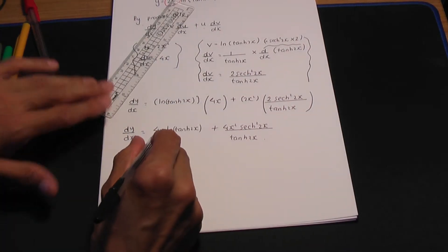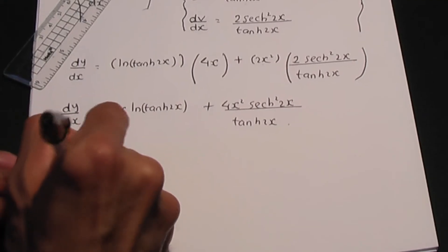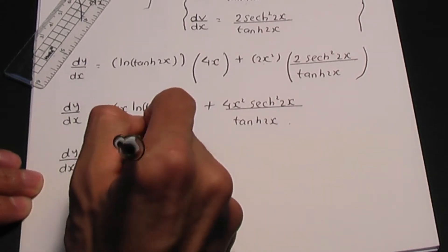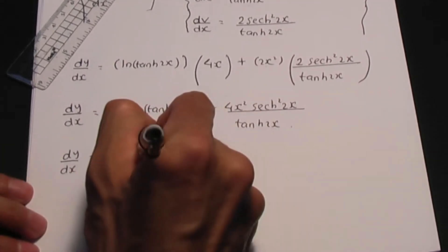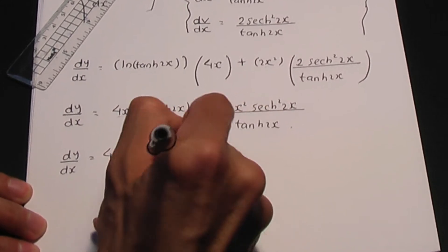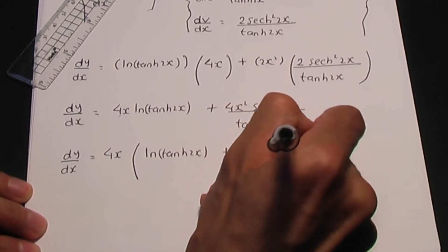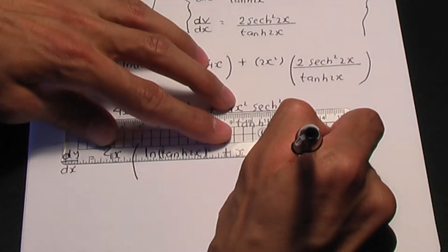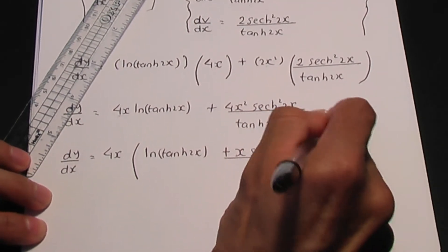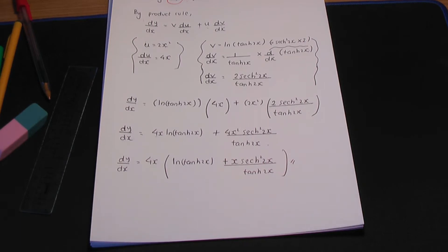So you could take out a common factor of 4x if you wanted to. So dy over dx, taking out a common factor of 4x, should give you ln hyperbolic tan 2x plus x hyperbolic sec squared 2x divided by hyperbolic tan 2x. So that should be the solution.